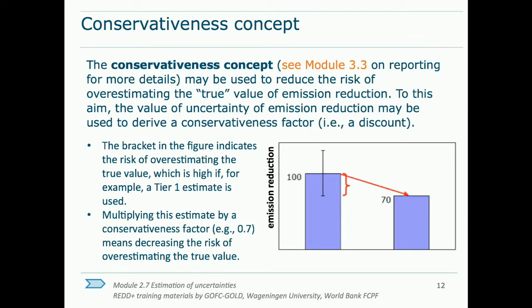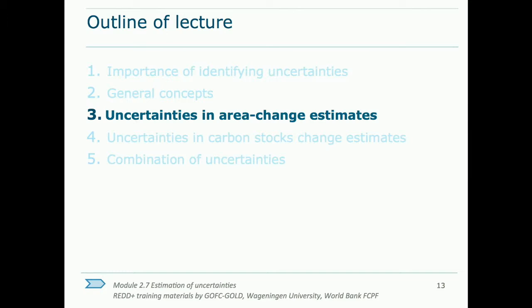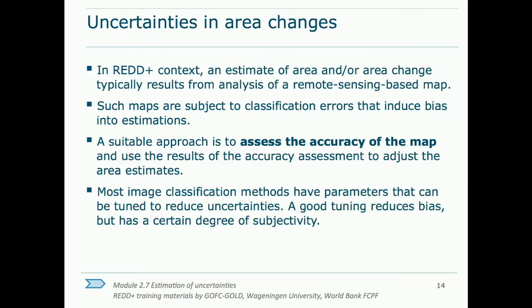The conservative concept is used to reduce the risk of overestimating the true value of emission reduction. Good practices require that between over and under estimating emission reductions, reductions should be underestimated. Uncertainty estimation can verify that the estimate reported is not an overrepresentation of the true value. In the REDD+ context, area and area change estimates come from maps derived from remote sensing data. Due to clouds and other image noise, the absence of training data, and general shortcomings in classification techniques, there are often biases in the estimates.